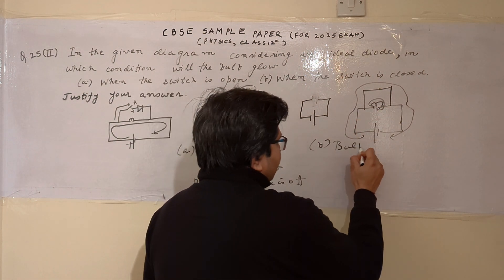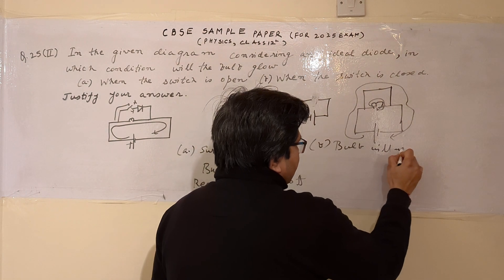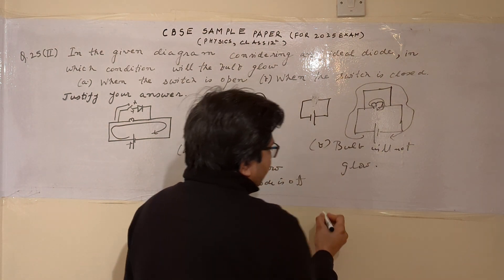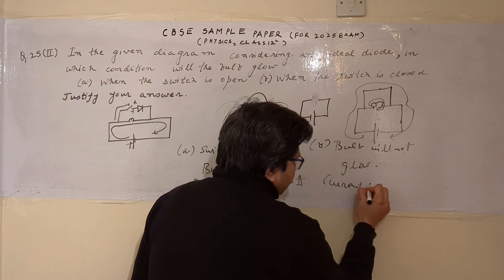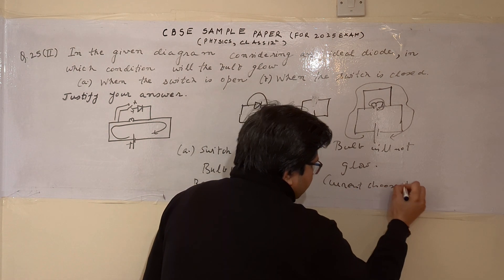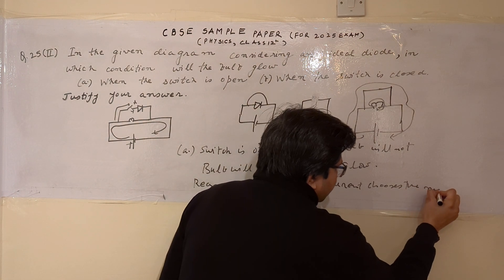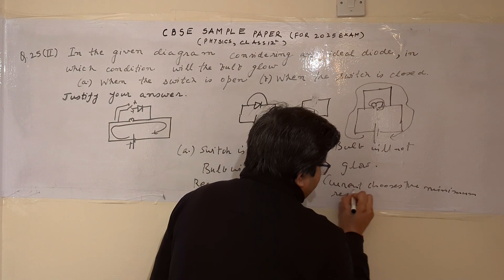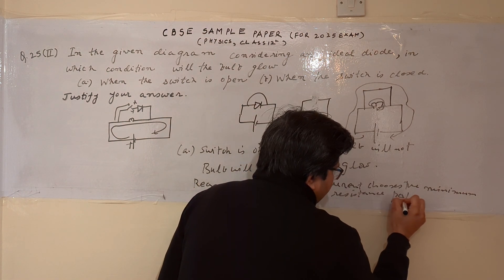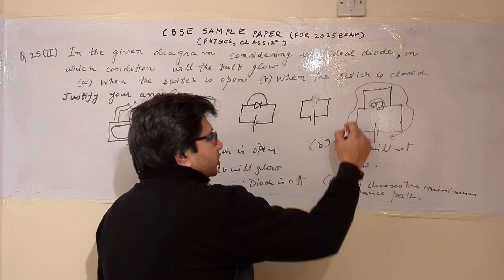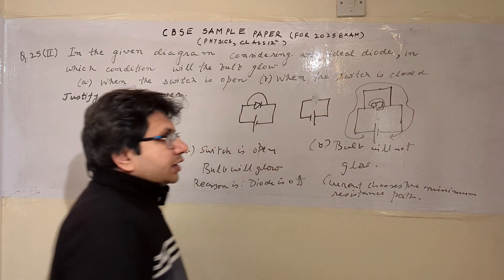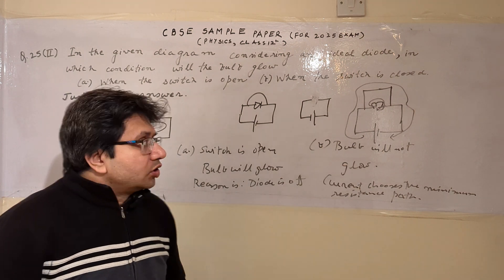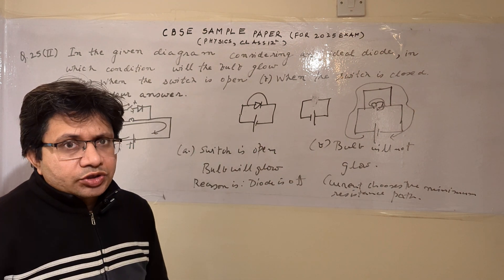So we can say the bulb will not glow. The reason is: current chooses the minimum resistance path, and the minimum resistance path corresponds to the short-circuited diode. Therefore, the bulb will not glow.